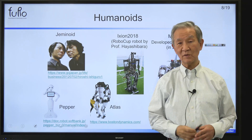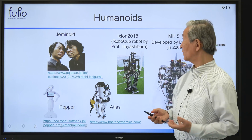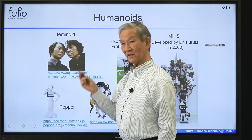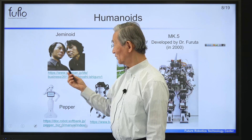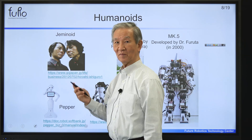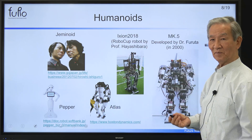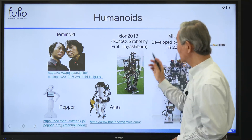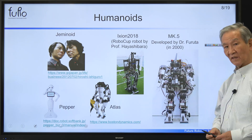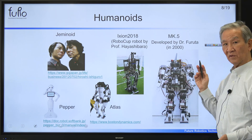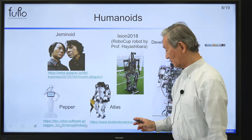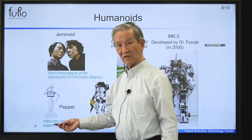The first thing you think about when you hear the word 'robot' is probably a humanoid. Here are some humanoids. The most outstanding one is called the Geminoid — do you know which one is the robot? This one is the robot. This is the guy who developed it; he built a robot that looks exactly like him. This one here is a RoboCop robot by one of the professors at Chiba Institute of Technology. And this one is called Mark 5, created by Dr. Furuta — he is the manager of our FURO, but he used to be my student. And Atlas is the very famous Boston Dynamics robot, and Pepper is a SoftBank robot.